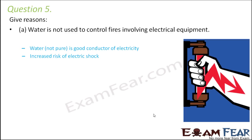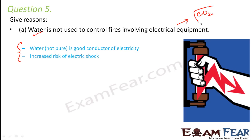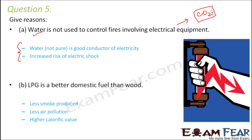Question number five: give reasons why water is not used to control fires involving electrical equipment. Water is normally not distilled — it is not pure water. It contains dissolved salts and minerals, so it is a good conductor of electricity. When we put water over electrical equipment, chances of getting an electric shock increase. Therefore, water is not used wherever electrical equipment is involved. Instead, carbon dioxide is used. LPG is a better domestic fuel than wood because it is environment friendly, produces less smoke, causes less air pollution, and has a higher calorific value.